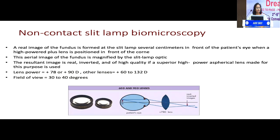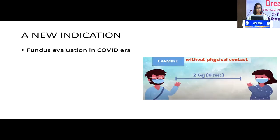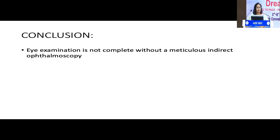A brief note on non-contact slit lamp biomicroscopy: we use lens power ranging from 60 to 90 diopters, and it is a very important tool for macular lesions. There was also a new indication during the COVID era where we used indirect ophthalmoscopy for evaluation. To conclude, eye examination is never complete without a meticulous indirect ophthalmoscope. Thank you.